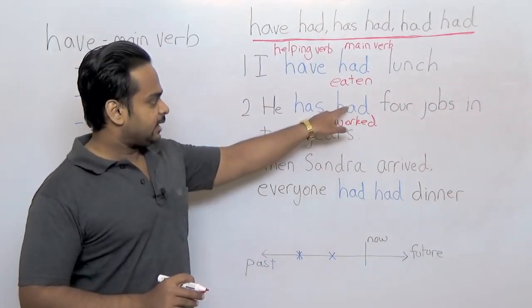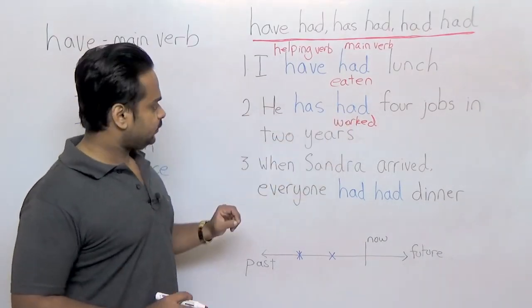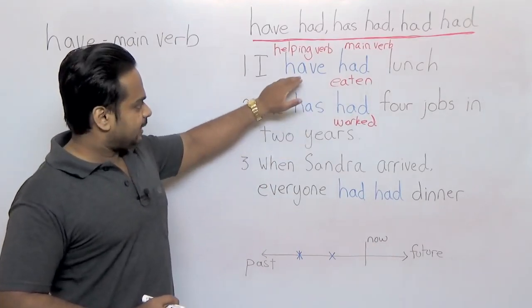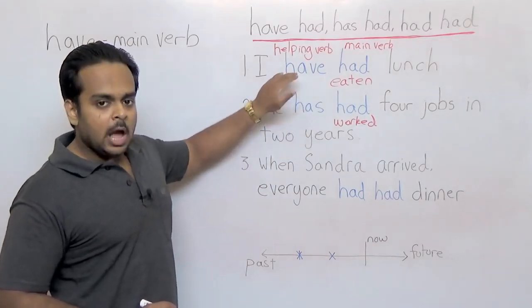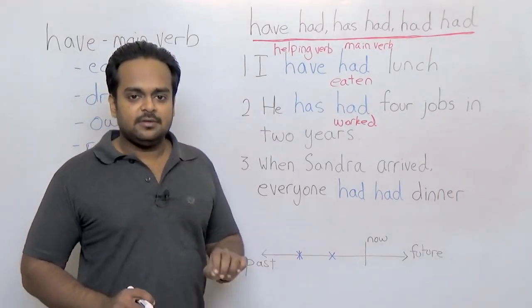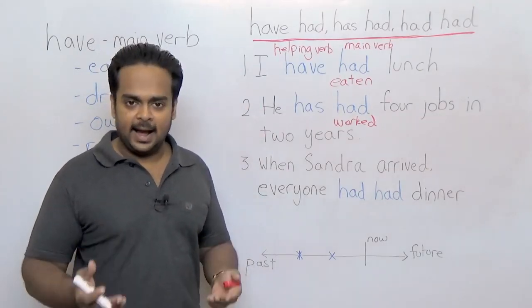So he has worked four jobs in two years is what it means. So once again, had is being used as a shortcut for worked. What about this has? Well, this is just the same as this have over here. But we are saying has because the subject is he.